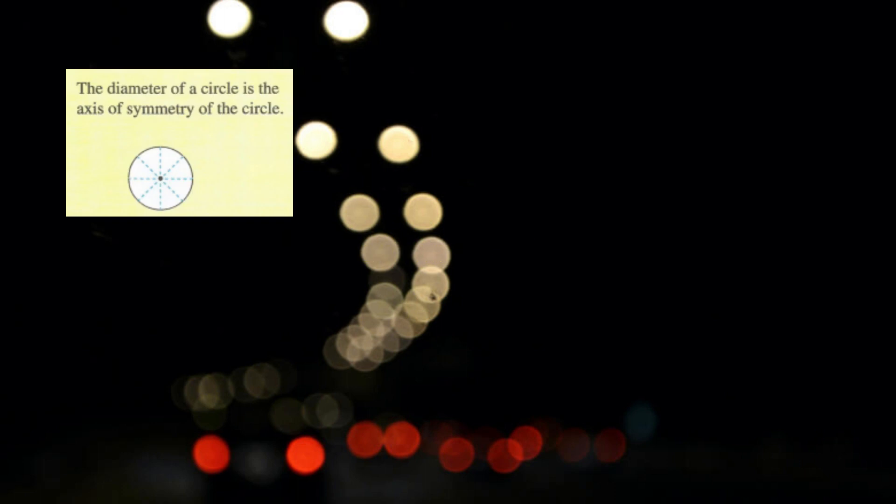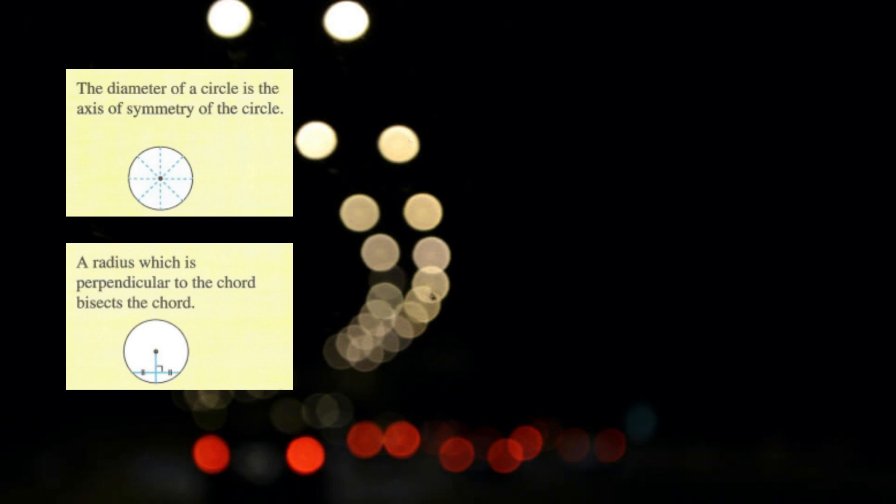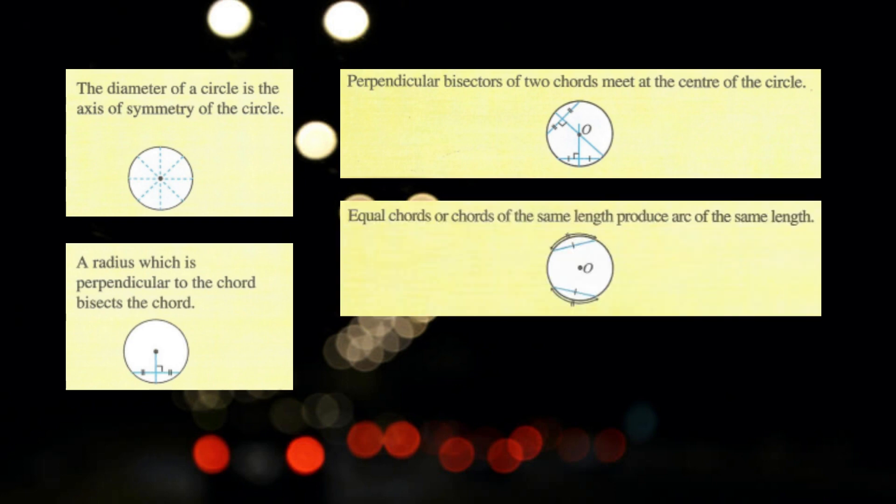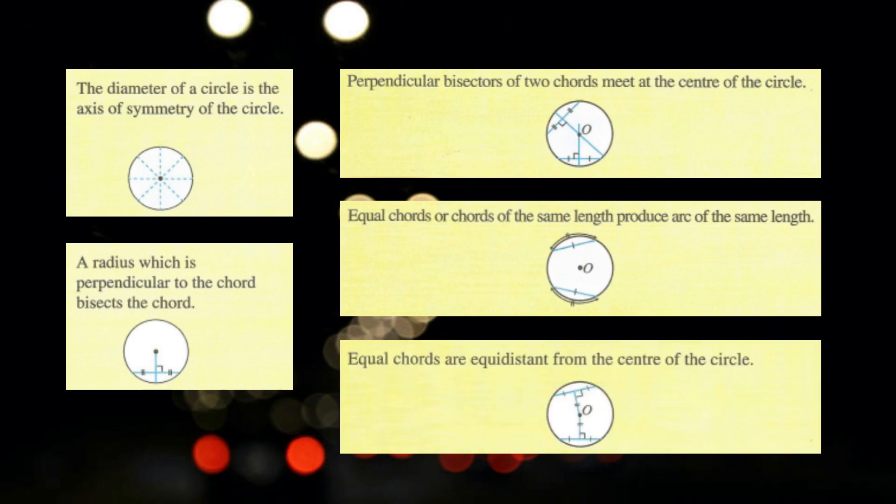Now, let's learn about the properties of a circle. The diameter of a circle is the axis of symmetry of the circle. A radius which is perpendicular to the chord bisects the chord. Perpendicular bisectors of two chords meet at the centre of the circle. Equal chords or chords of the same length produce arc of the same length. Equal chords are equidistant from the centre of the circle.